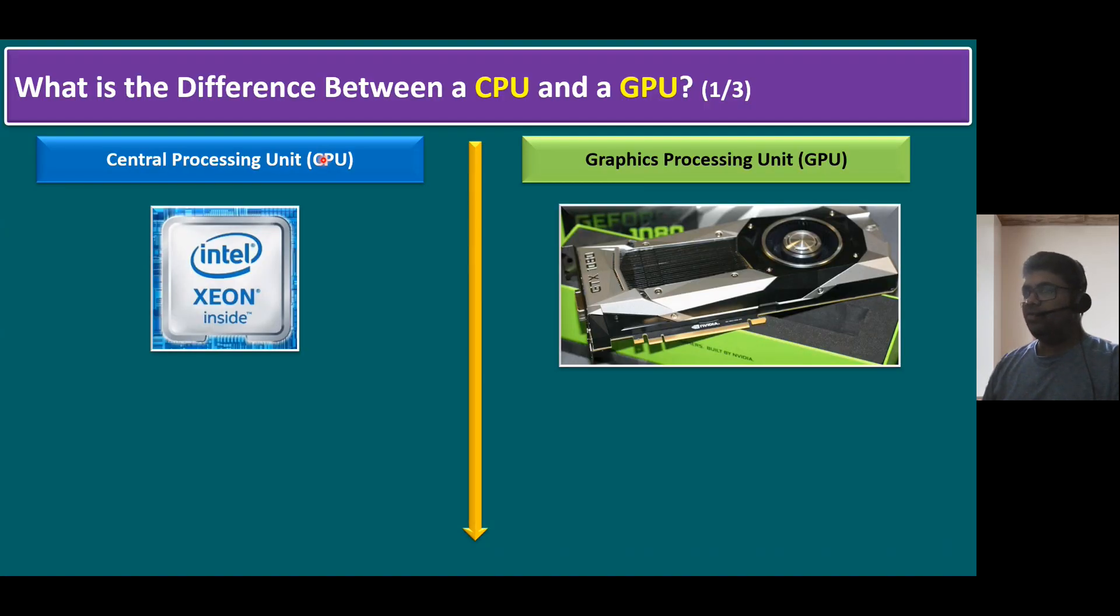As we know, CPU full form is Central Processing Unit, and GPU full form is Graphics Processing Unit. The CPU has popular vendors like Intel and AMD, both are the most reputed vendors. I took the example of one of the Intel processors, integrated electronics, and there are so many varieties of models. I took the example of Intel Xeon processor.